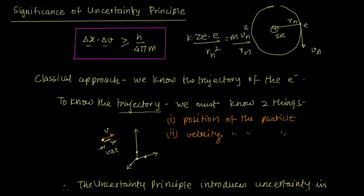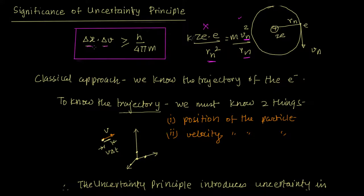Now you understand what our trouble is. We somehow claim that Rn and Vn are known, but the uncertainty principle says they are not. Hence the failure of the classical approach — except when it was for monoatomic systems, because then the error was small and you were able to cruise through. The moment a second electron comes in, it creates havoc because you were already dealing with an inaccuracy.